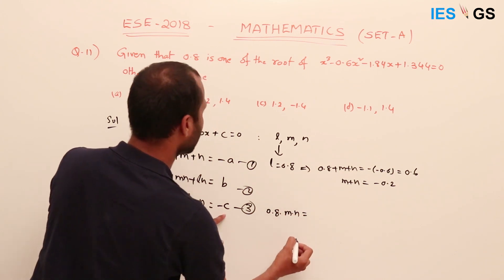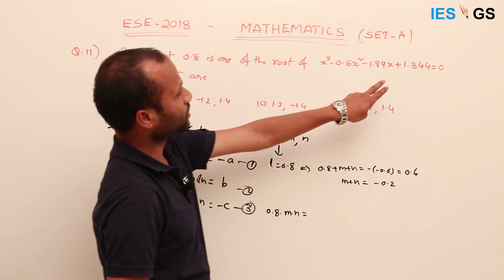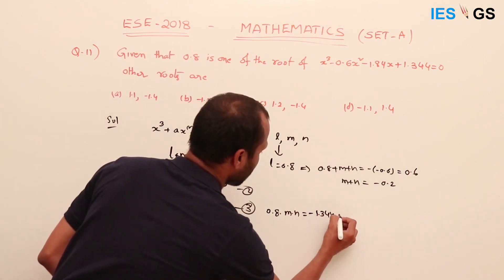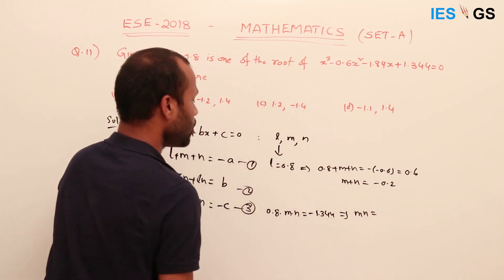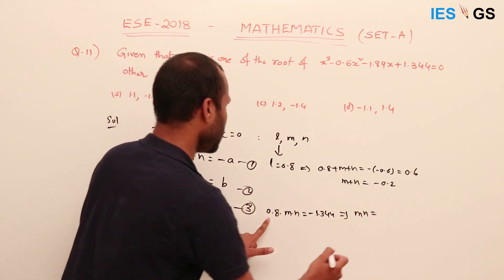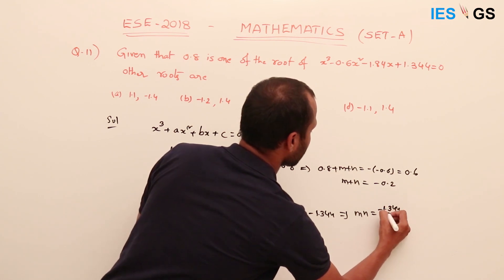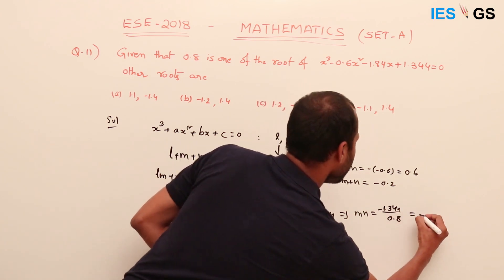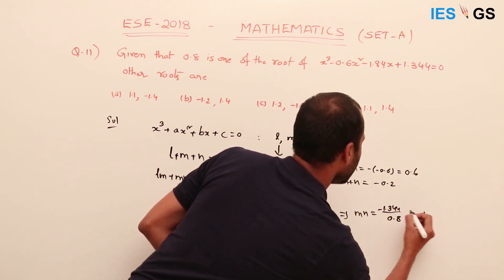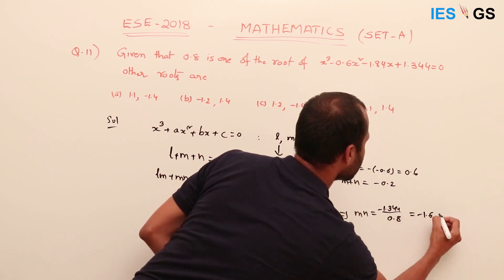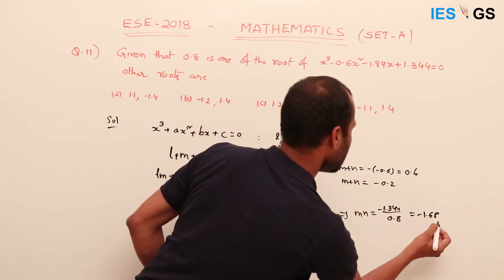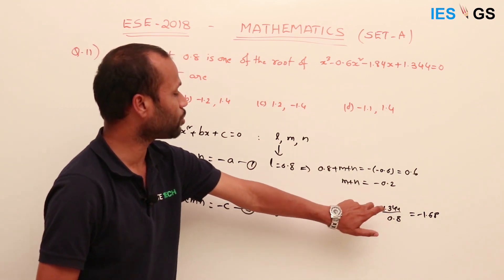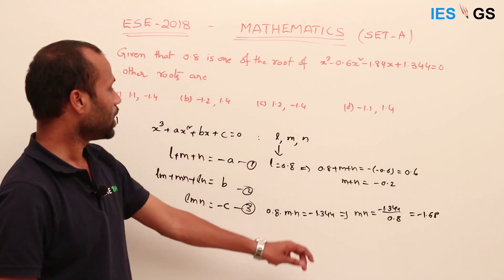From the third equation, 0.8 times m times n equals minus c. Since c is 1.344, minus c is minus 1.344. So m times n equals minus 1.344 divided by 0.8, which equals minus 1.68. Now we have m plus n equals minus 0.2 and m·n equals minus 1.68.